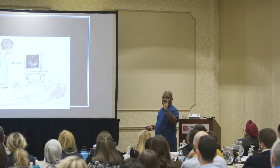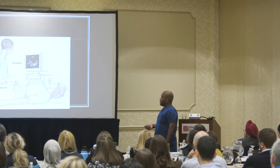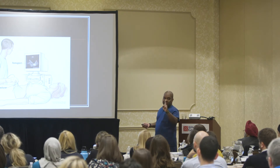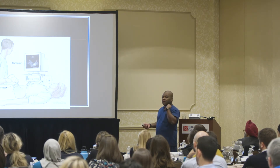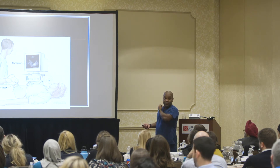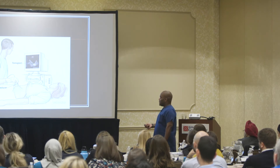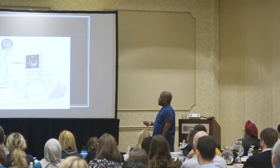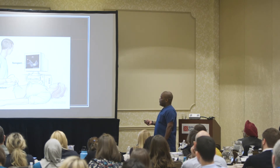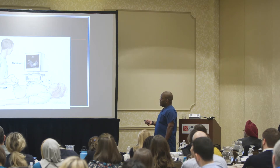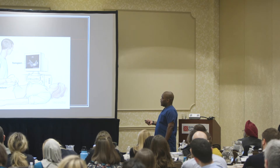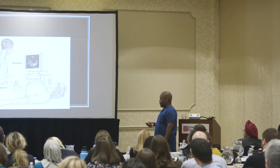There's a marker on every transducer. The marker is to go towards the patient's head or towards the patient's right. There's one exception: when you're doing IJs, the marker matches the IJ — right IJ, marker goes to the right; left IJ, marker goes to the left. Otherwise, always to the patient's head or to the patient's right. That corresponds on the screen with a little green dot indicating where the marker is, so you know what's towards the patient's head and what's towards the patient's legs.